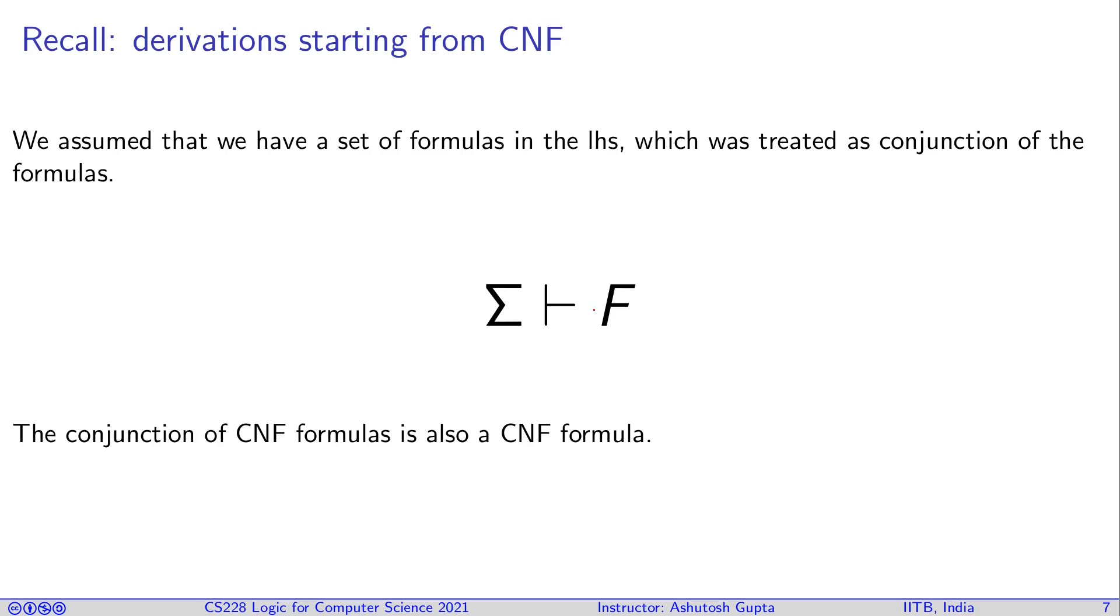So conjunction of CNF formula is also a CNF formula. So if we have only CNF formula in the left-hand side, then we can treat as a one giant CNF formula implying other CNF formula that may simplify our view of the proving process.